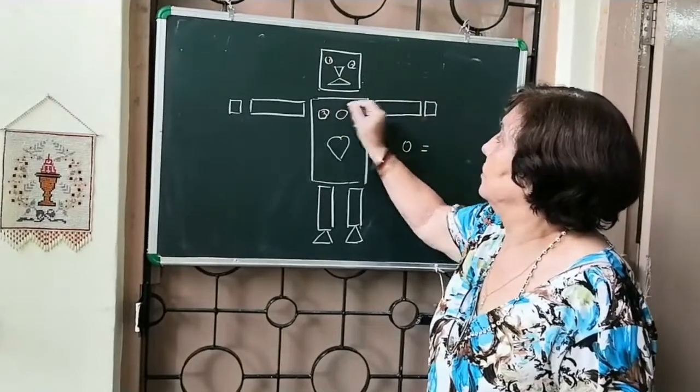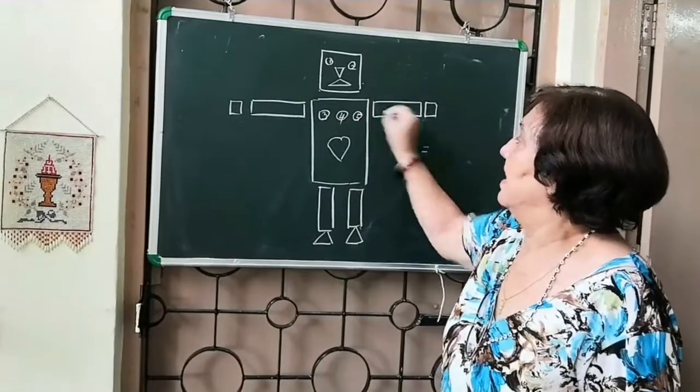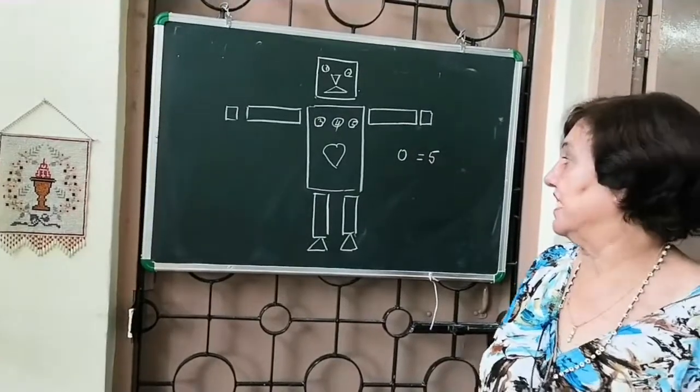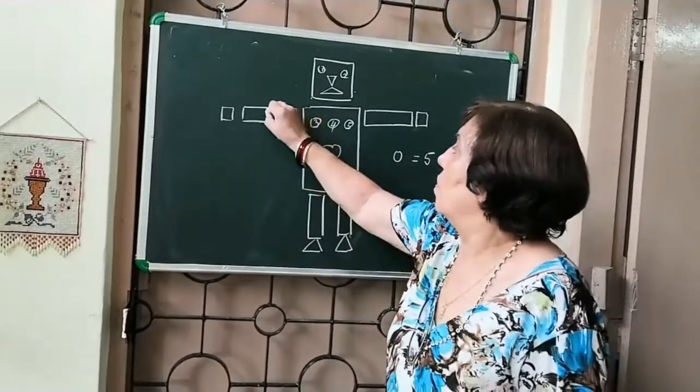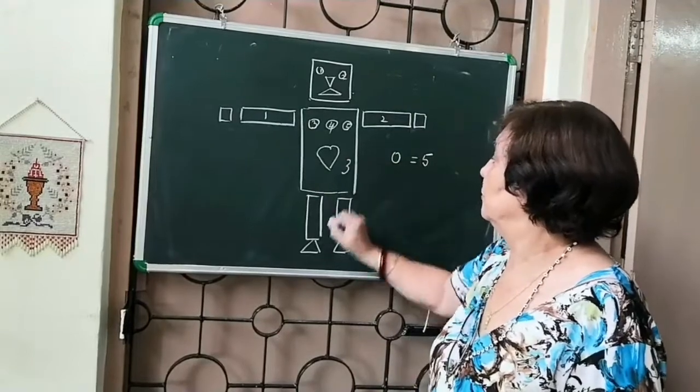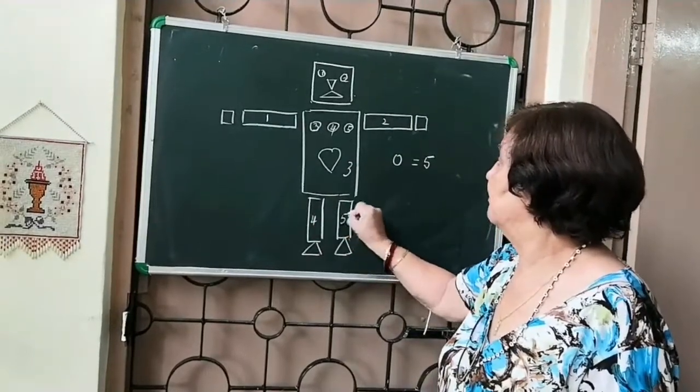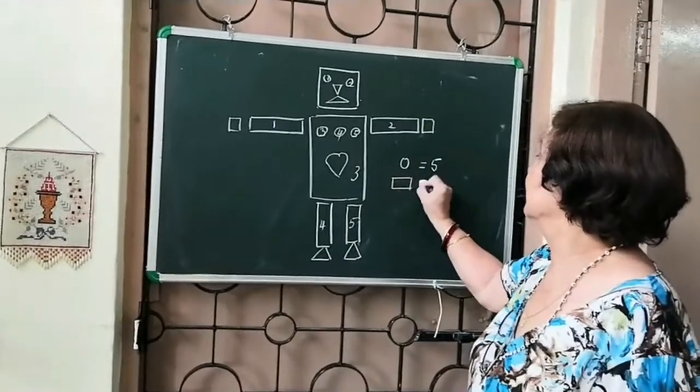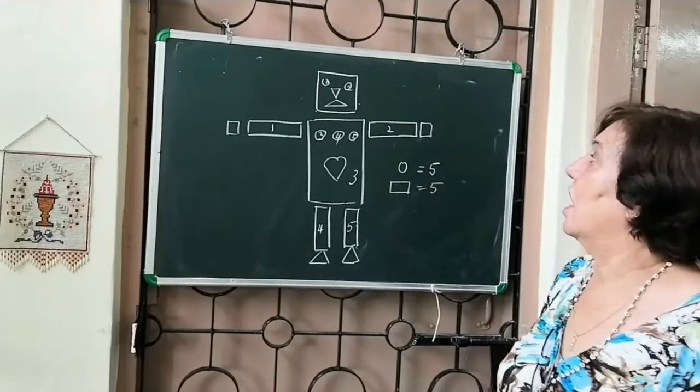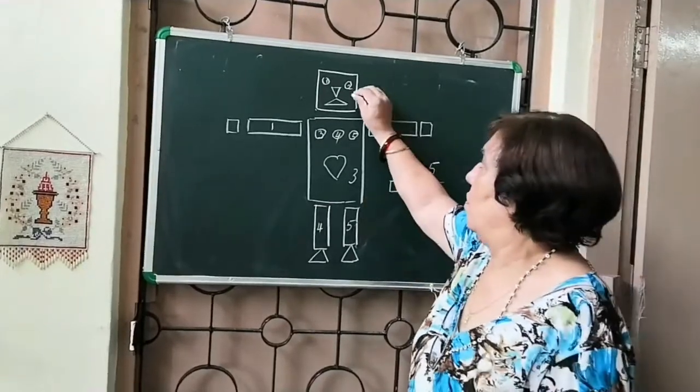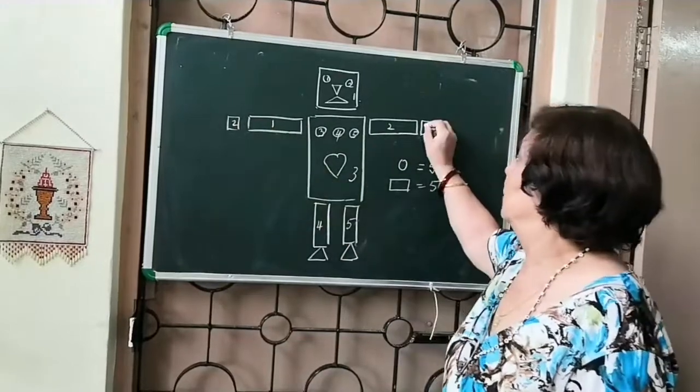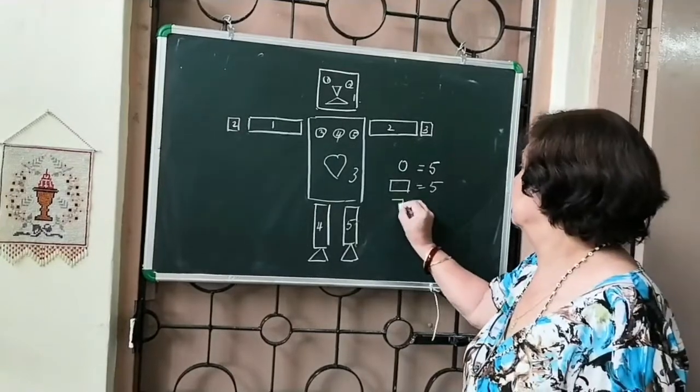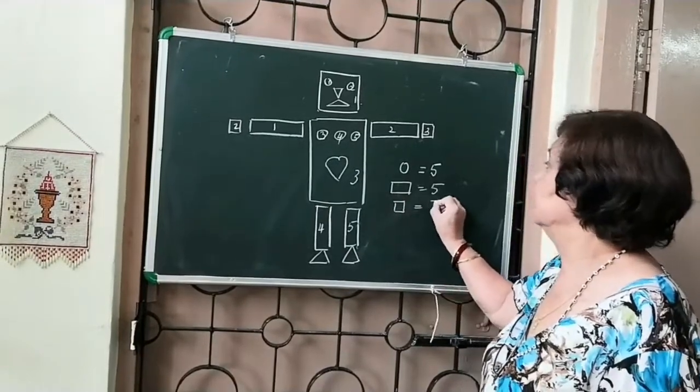Now let's count the number of rectangles one two three four five oh my god there are five rectangles in this also so five circles five rectangles now how many squares one two three there are how many squares three squares.